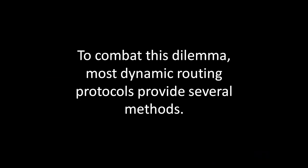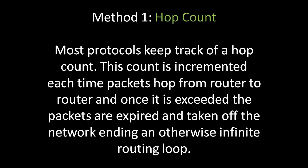To combat this dilemma, most dynamic routing protocols provide several methods. Method 1 is hop count. Most protocols keep track of a hop count. This count is incremented each time packets hop from router to router, and once it is exceeded, the packets are expired and taken off the network, ending an otherwise infinite routing loop.